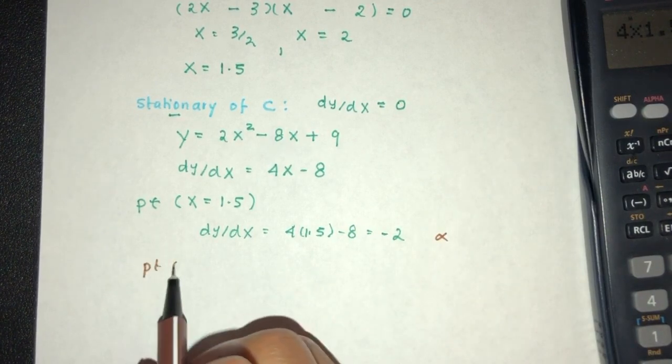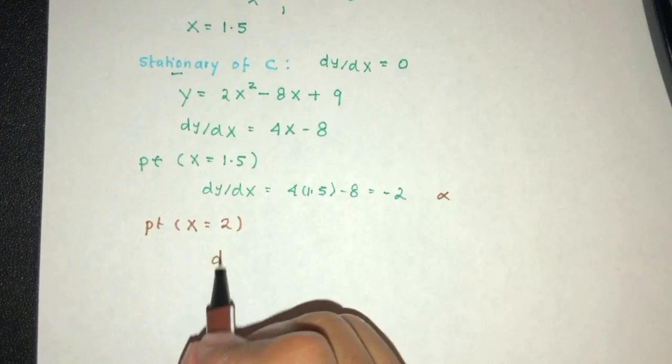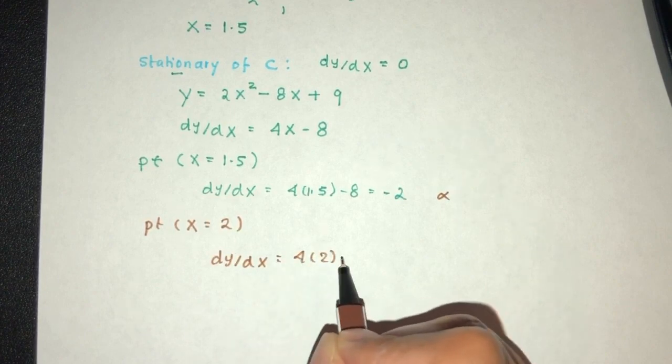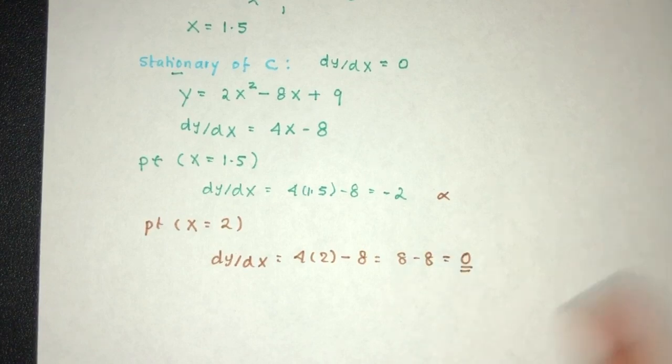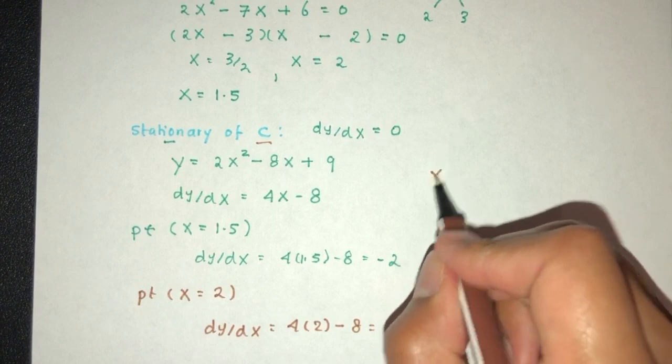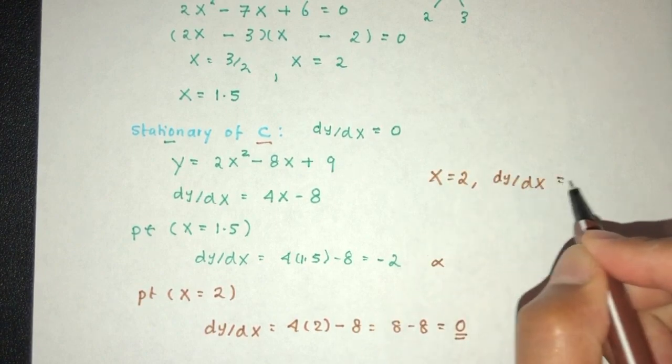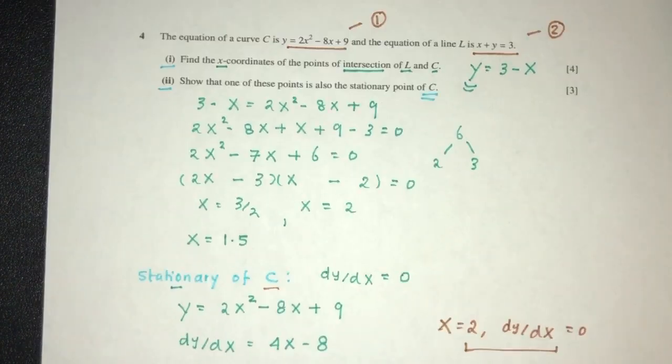Now the point where the value of x is 2, let's check what happens. dy by dx at the value of x times 2, that will be 8 minus 8, and that will be 0. Here you go. So we prove that at the point where x equal to 2, dy by dx is equal to 0, which proves it is a stationary point. And that will be part 2 of the question.